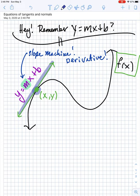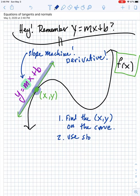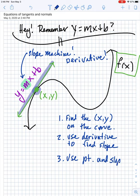So just kind of in general, the steps can be something like this. One, find the xy on the curve. Two, use slope machine, or I should say derivative. Use derivative to find slope. And then three, use point and slope to get a y equals mx plus b. Okay? Let's do the first example.